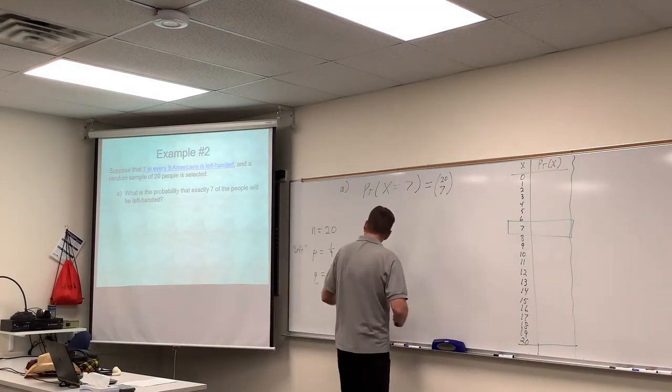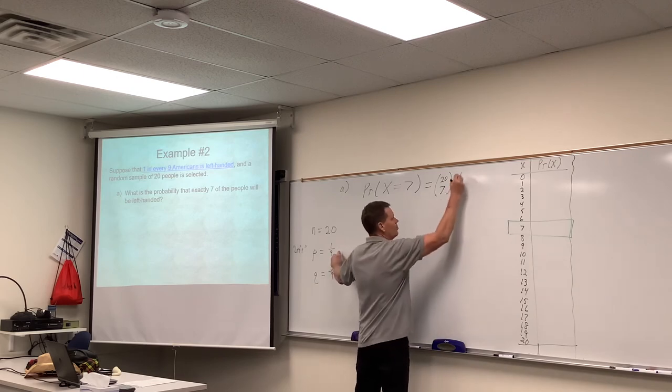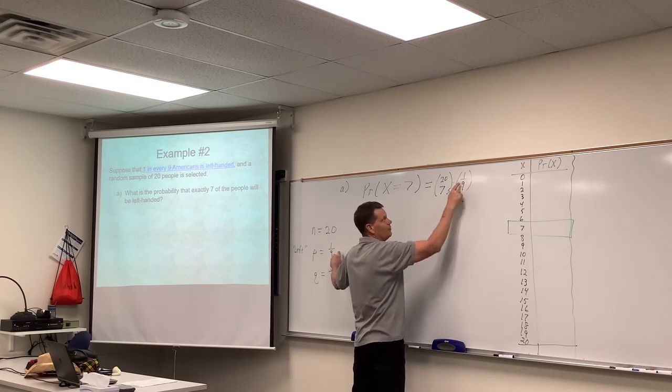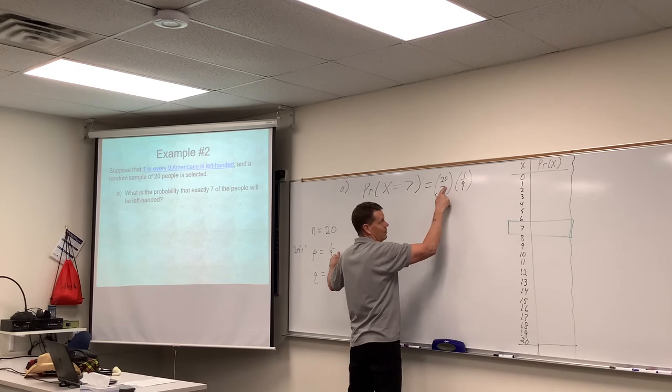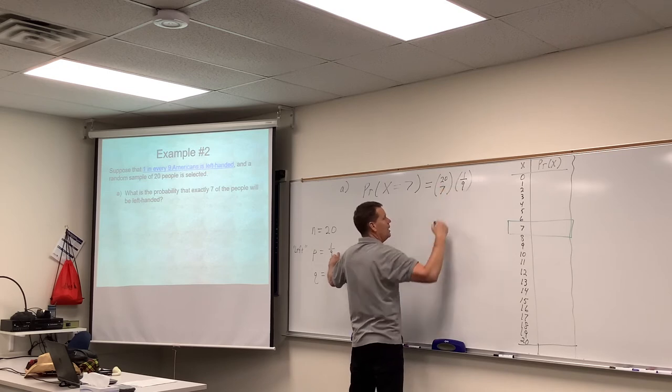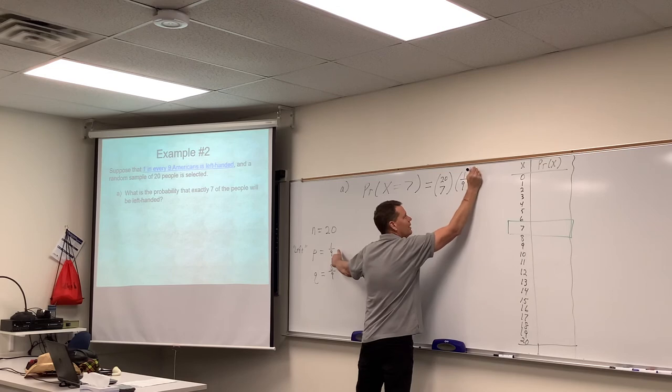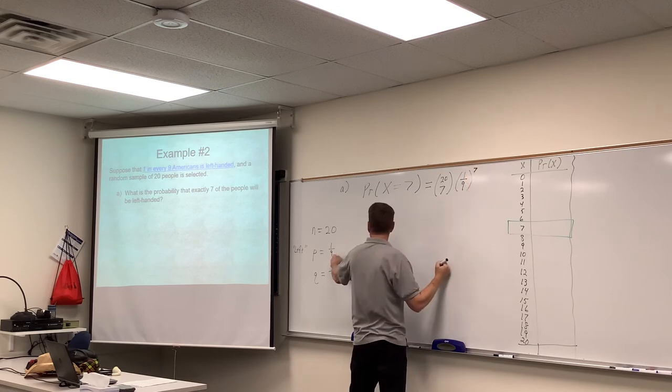C(20,7). Left-handed, which has a probability of one-ninth. Notice the difference. That's a fraction. That's a combination. Got a fraction bar here. Seven people are left-handed. So that would be one-ninth to the seventh power.